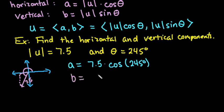I'm going to go ahead and write both of them down so I can just find both of them at the same time. And my vertical component, the b, is equal to 7.5 times cosine, sorry, sine, I'm reading up above, sine of 245 degrees.